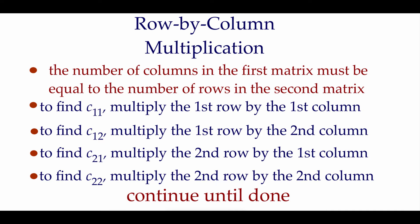The process is called row by column multiplication. The number of columns in the first matrix has to match the number of rows in the second matrix — that's that middle part of our orders where those two numbers matched up. To find entry C11, the first row first column of the new matrix, we take the first row of matrix A times the first column of matrix B and add the products. For C12 it's first row times second column, for C21 it's second row times first column, and so on. This might be a little confusing written out, but it'll make more sense with actual examples.